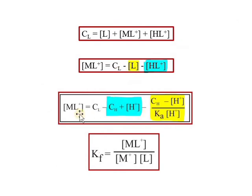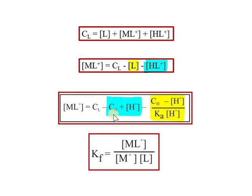The total initial ligand concentration is distributed among: unreacted ligand, ligand that formed metal complex, and ligand that reacted with hydrogen ion to form HL+. So the concentration of ML+ equals the total ligand CL minus the concentration of HL+ minus the unreacted L. We substitute the HL+ value (CH minus H+) and the previously calculated L value to get the ML+ value. With ML+, M+, and L known, we can calculate the formation constant.